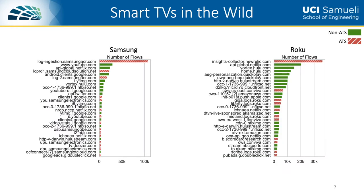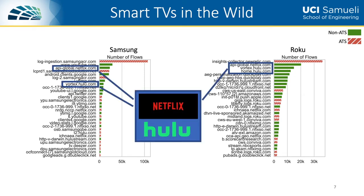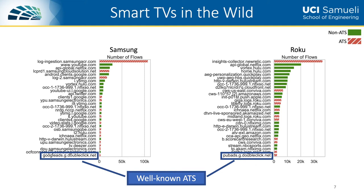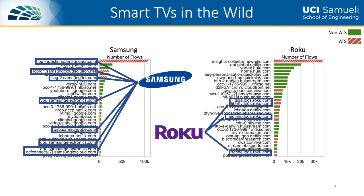We first analyzed the top 30 most contacted domains in our in-the-wild dataset. ATS domains are highlighted in red and non-ATS domains in green. Here we show examples for Samsung and Roku, but the trends are similar for the remaining platforms. As expected, we observe that some of the highest-ranked domains pertain to popular streaming services. We also see ATS domains well known from the desktop and mobile ecosystems, such as subdomains of Google's DoubleClick.net domain. More interestingly, several ATS domains are unique to each individual smart TV platform, pertaining to the platform operator, suggesting that the smart TV ATS ecosystems differ across platforms.